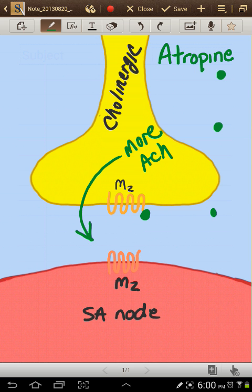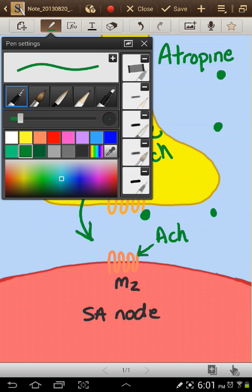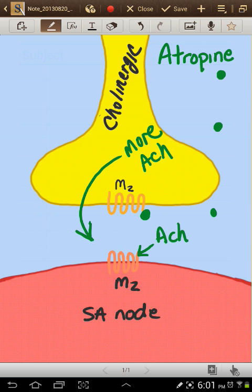Now we have more acetylcholine in the junction. And now that will bind to the SA node, the M2 receptor and the SA node. And here, again, it is still a GI protein.